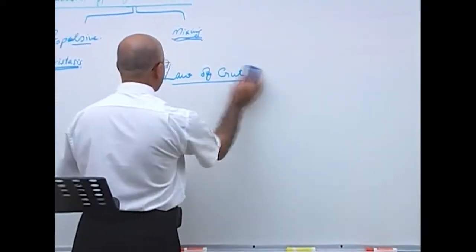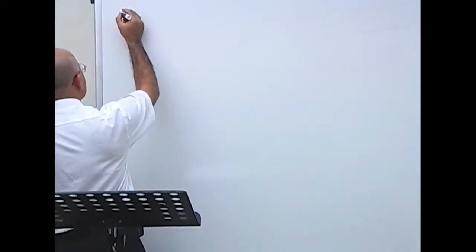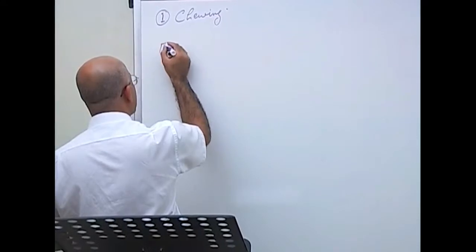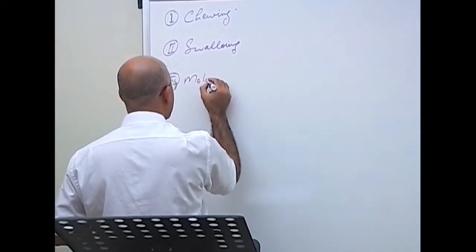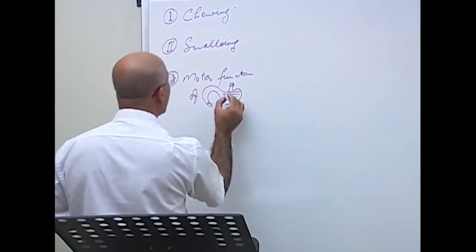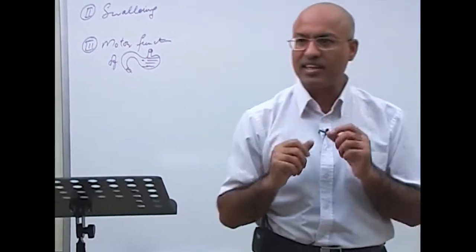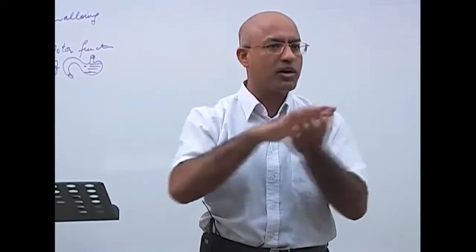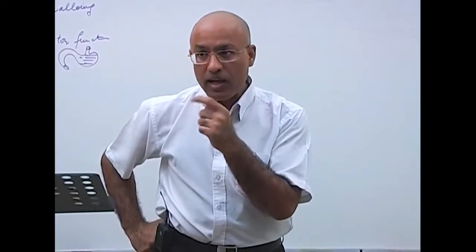Let's start with ingestion. First we discuss chewing, then swallowing, then motor functions of the stomach. Chewing is when you put an eatable substance in your mouth and grind, cut, and break it down. The frontal incisors are good for cutting and the back teeth for grinding. Chewing can be done voluntarily, but it also has a reflex component — you can start chewing gum and then forget you are doing it, with the chewing reflex taking over.